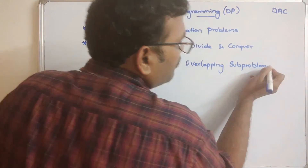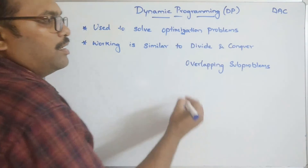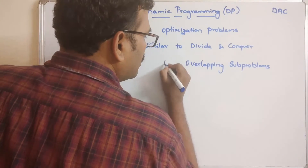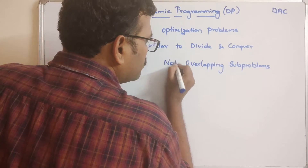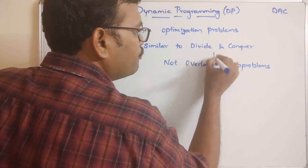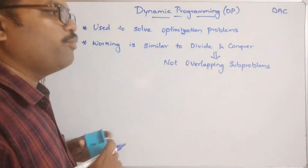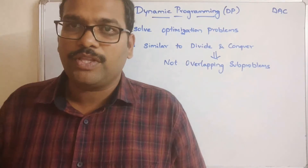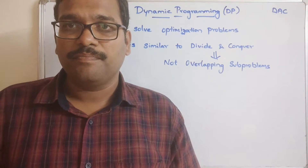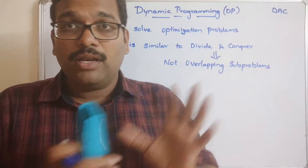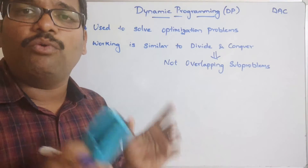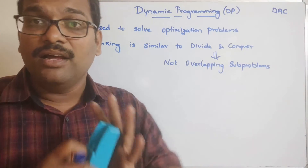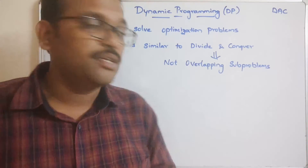In contrast, in the case of divide and conquer, the sub-problems are divided without any overlapping solutions. Let me explain what exactly overlapping sub-problems and non-overlapping sub-problems are, and write the steps to differentiate these two approaches.